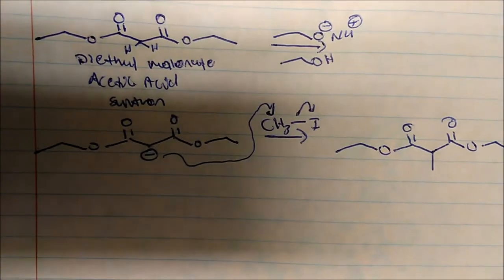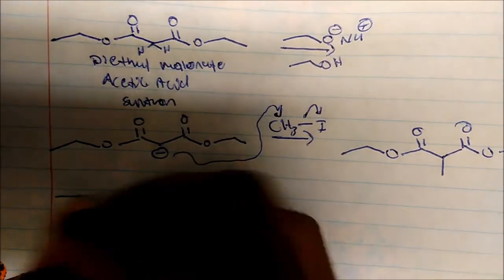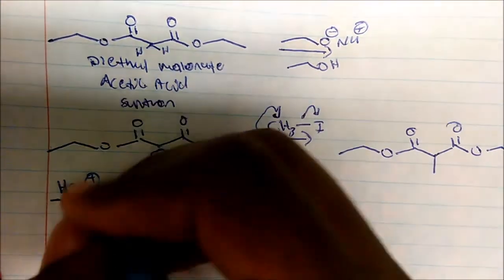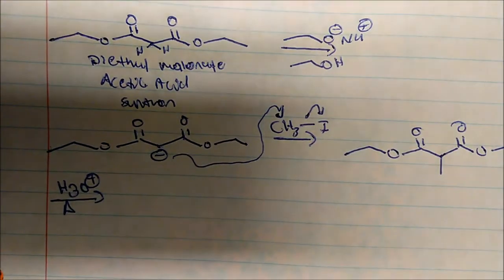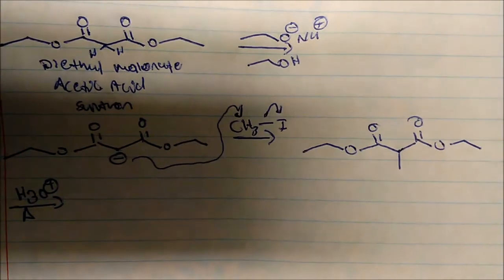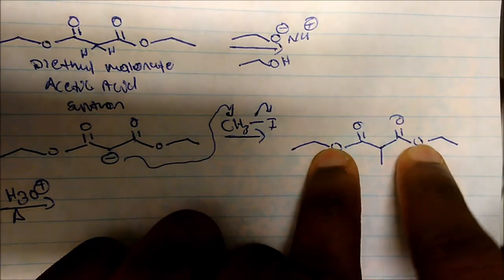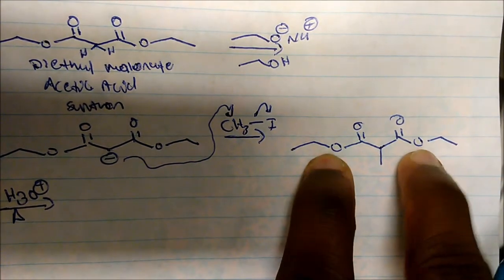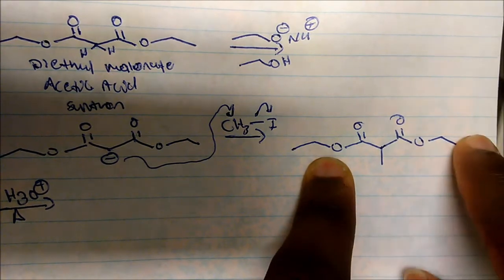Now in the second step, in the third step of the synthesis, we actually use acid and hydrolyze the molecule. So we use acid and heat and hydrolyze the molecule. And what acid does is that it totally eradicates the molecule and hydrolyzes it to give us a dicarboxylic acid and two moles of ethanol.